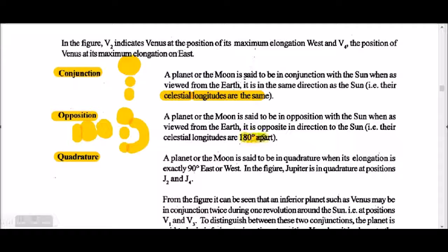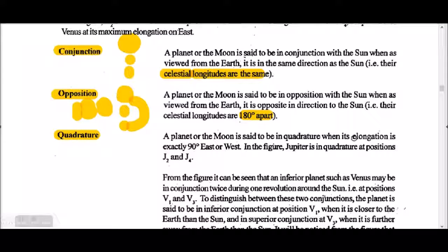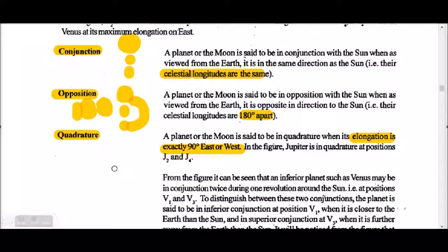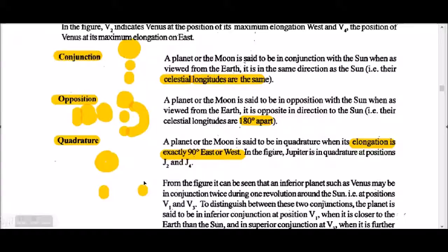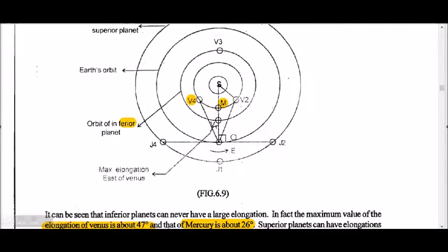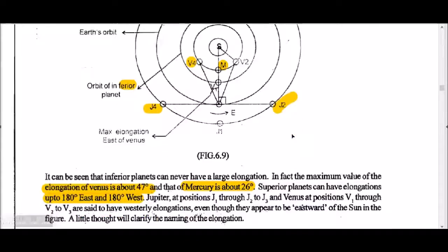For opposition: Sun and Earth are given, and the planet or moon is on the opposite side, making 180 degrees. That is quadrature — a planet or moon is said to be in quadrature where the elongation is exactly 90 degrees east or west. For quadrature: here is the Sun, here is the Earth, and the planet makes a 90-degree angle at the Earth. Venus is tangentially making 90 degrees as well.